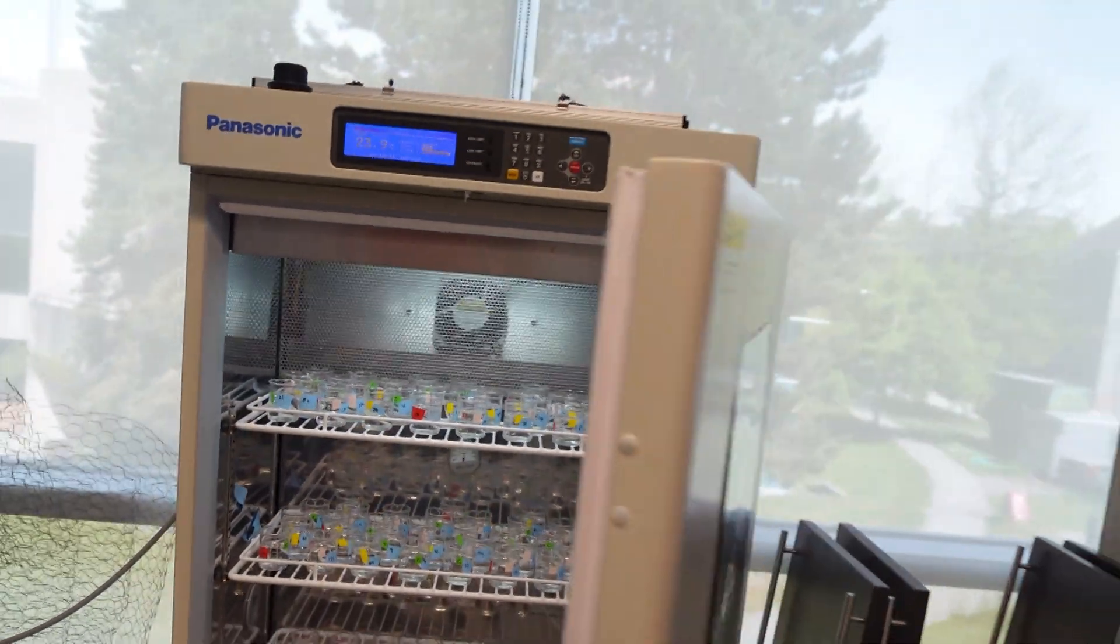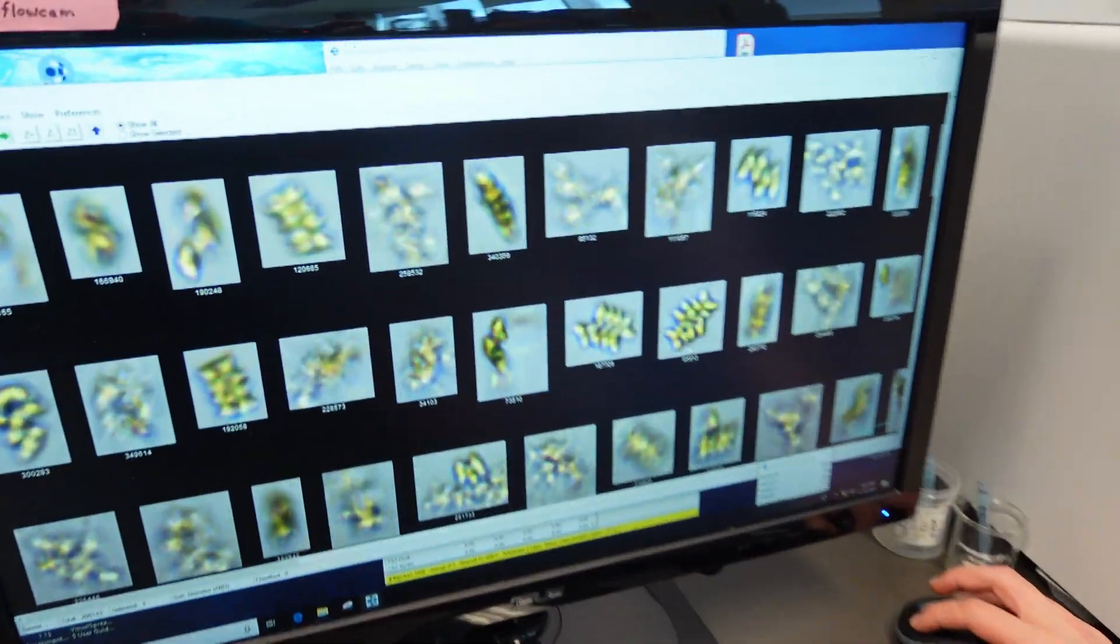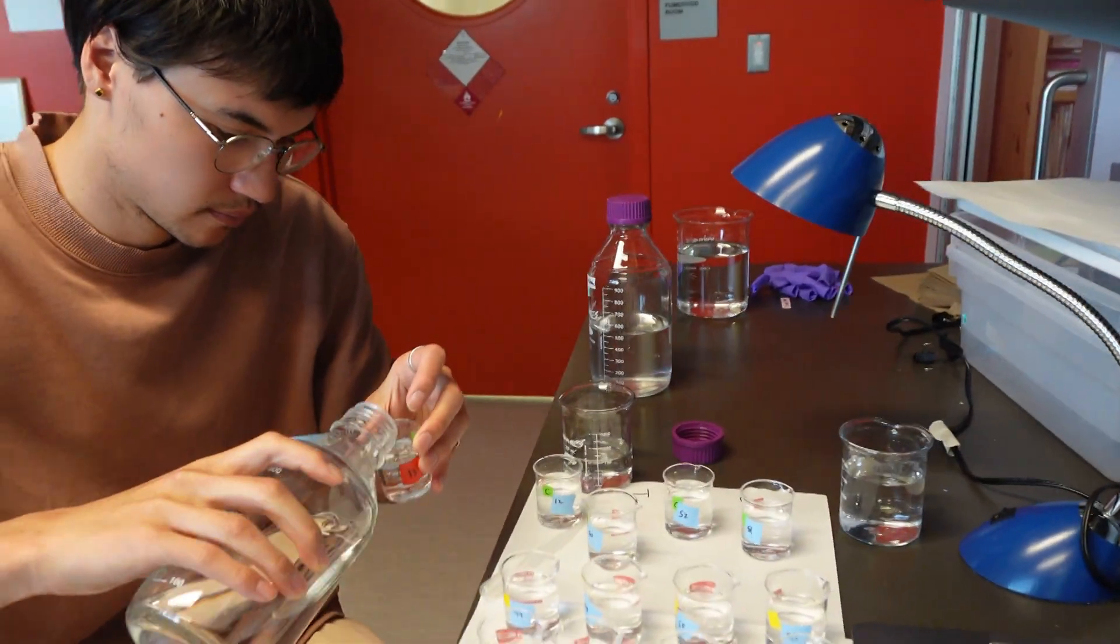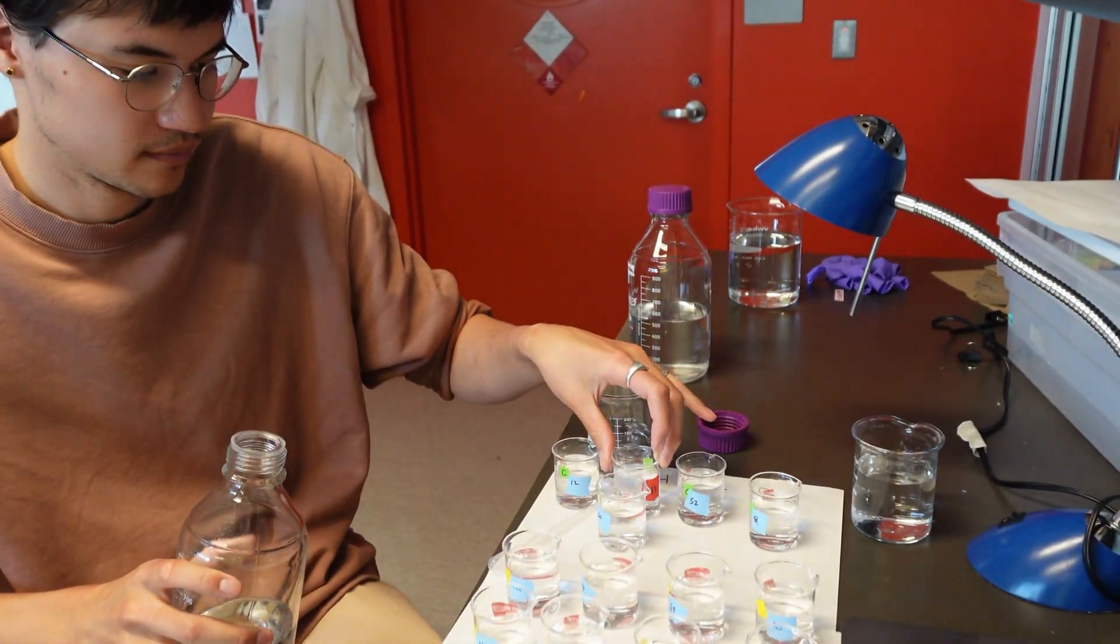When we're in the lab, we're usually growing insects in these temperature-controlled incubators, or we're also growing plankton in these temperature-controlled incubators. We have a lot of beakers or jars everywhere, and each beaker or jar has a few insects or a few plankton in them.